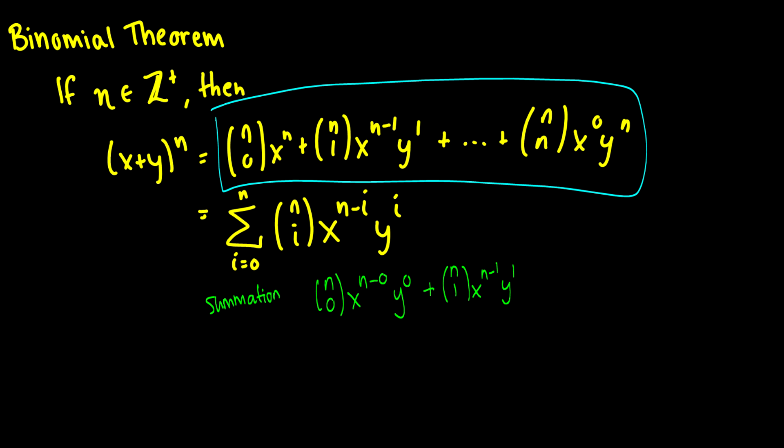Basically you start with the largest power of x to the n, and then each subsequent addition you move one power of x over to y, until y reaches y to the power of n. That's an informal way of explaining what's going on.